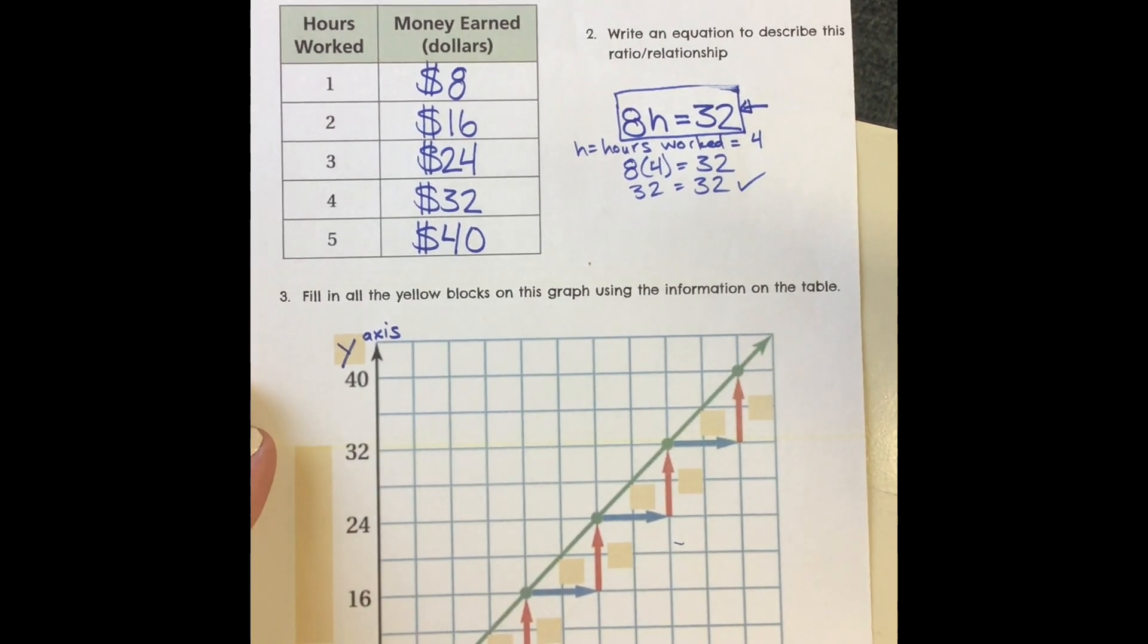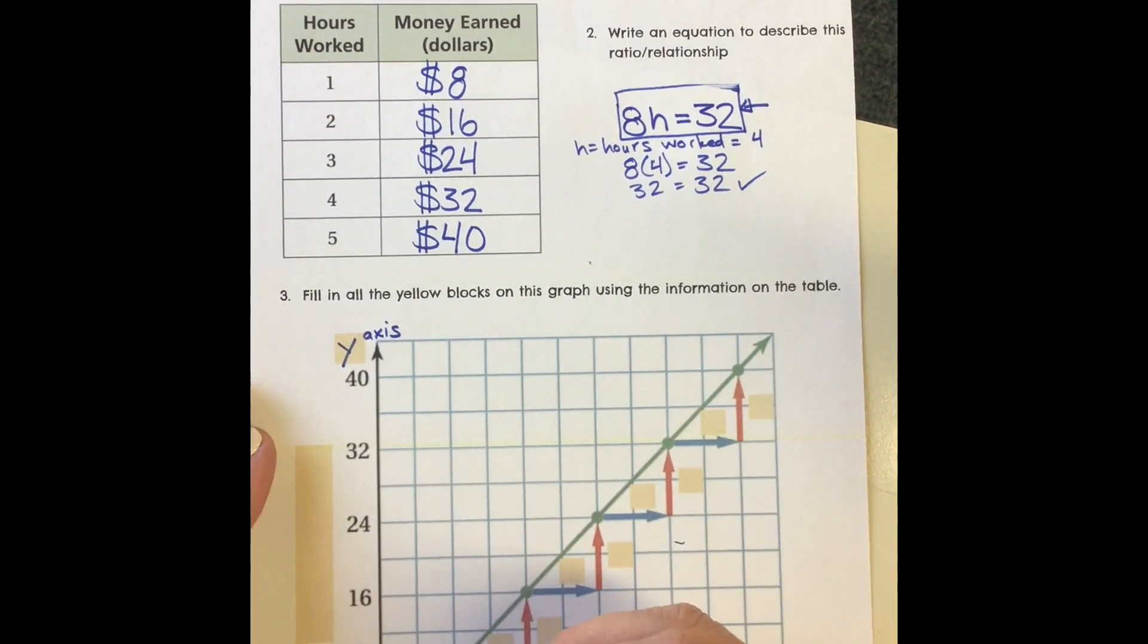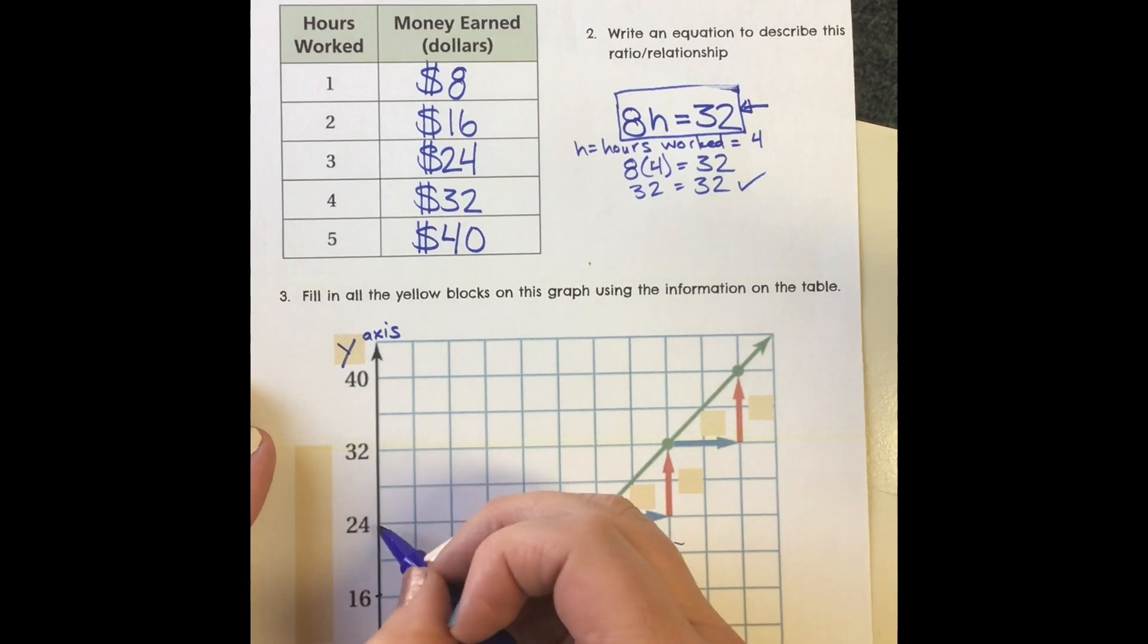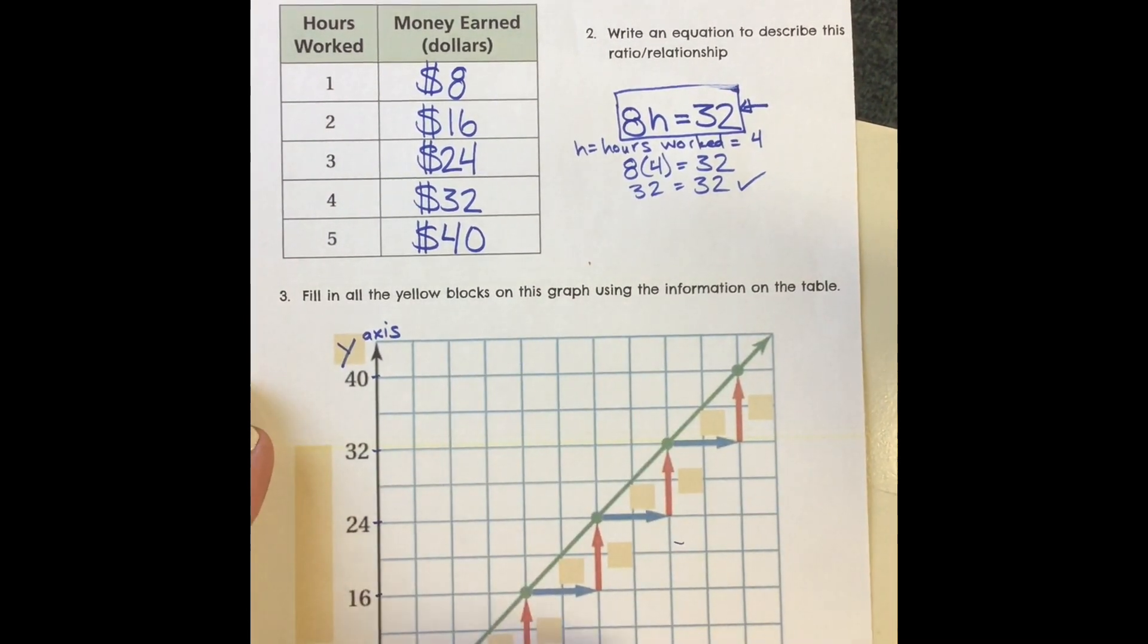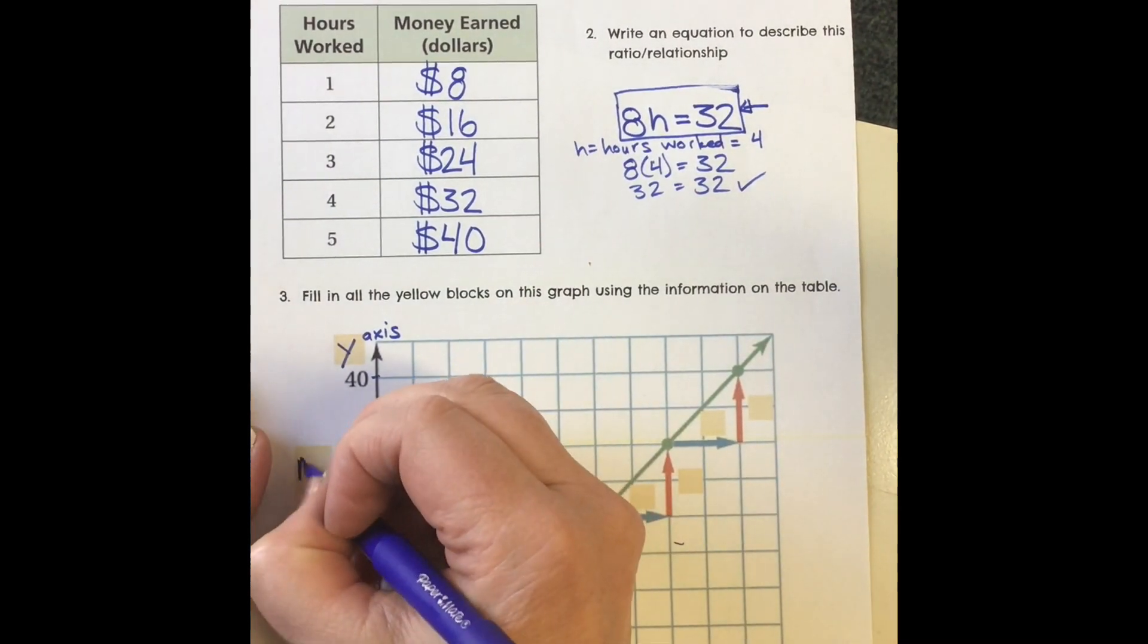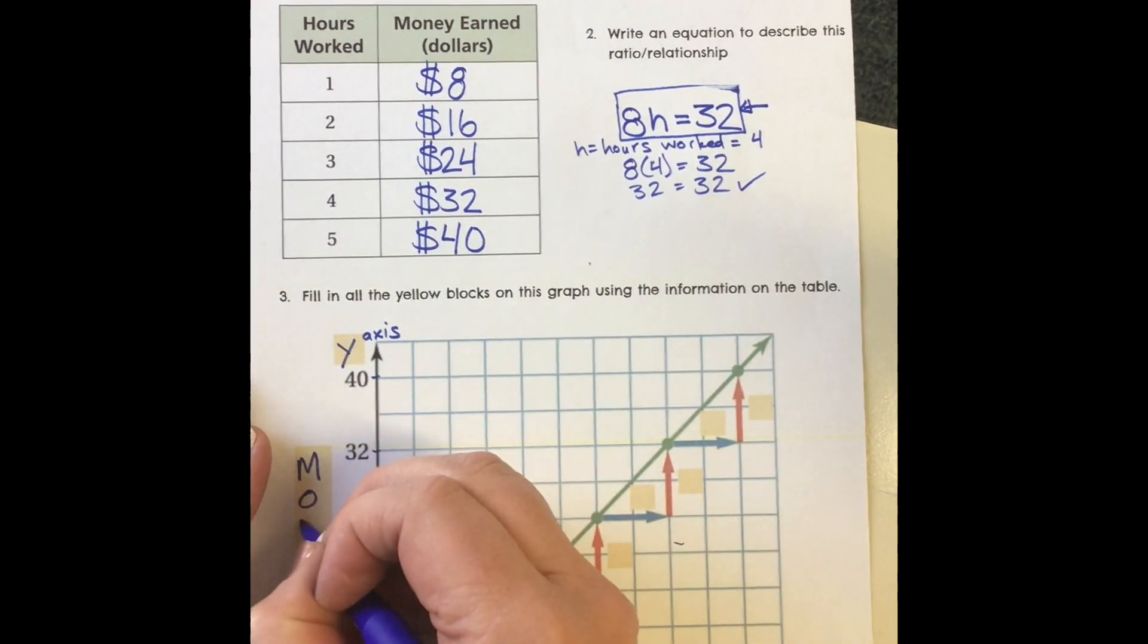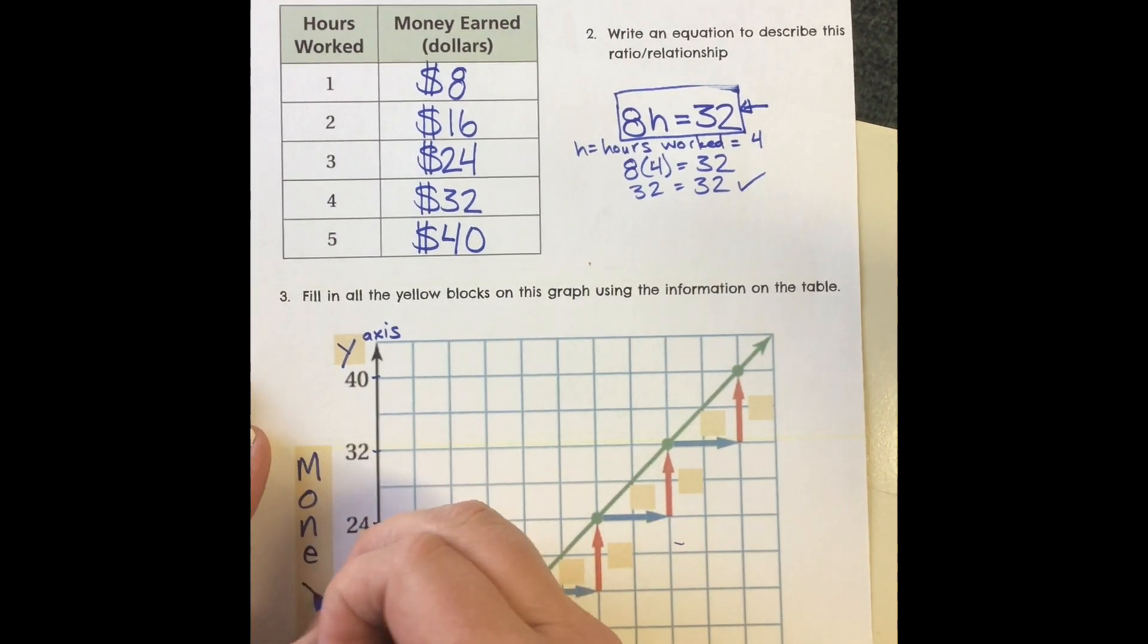Now, labeling my graph, what is going up here? You can see it's going up in increments of 8. What goes up by 8? It's the money earned. So this is all about the money. There's my money.